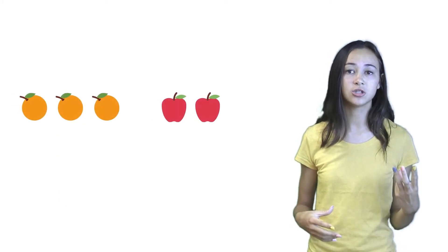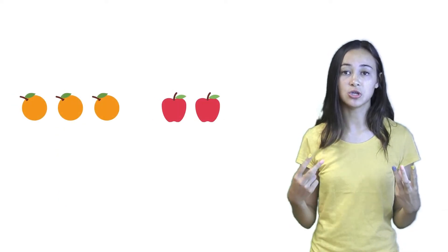It means that if Martha uses three oranges to make her juice, she's going to have to use two apples.